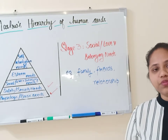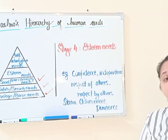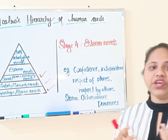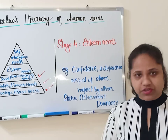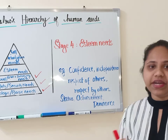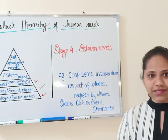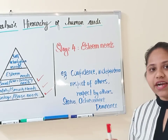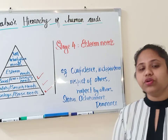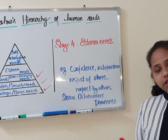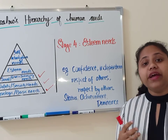Only when social needs are fulfilled do you move to esteem needs. When you have a job, a family, and property, you need to have dominance over them, confidence, and independence. You gain respect from others because of the things that you own, gaining status and prestige in society. You also give respect to others. In esteem needs you gain confidence, become independent, gain and give respect, achieve status, and possess dominance towards the things that you own.